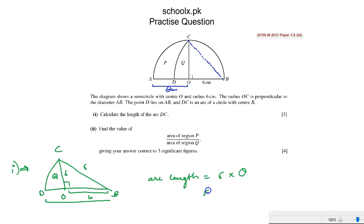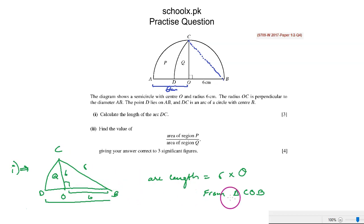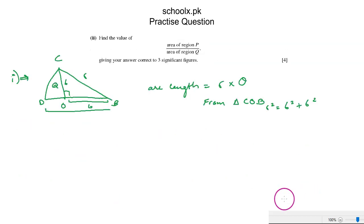R can be found from triangle COB, which is a right angle triangle. So R squared equals 6 squared plus 6 squared. Computing this, we get R equal to 8.48 centimeters.